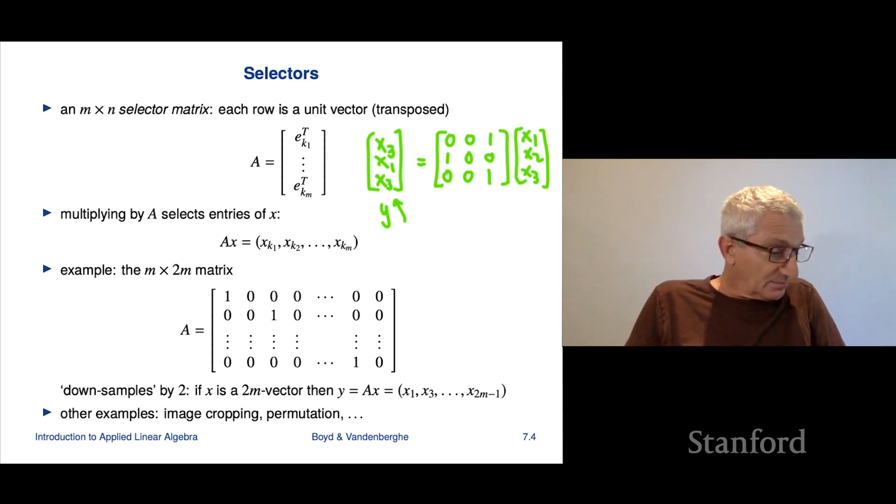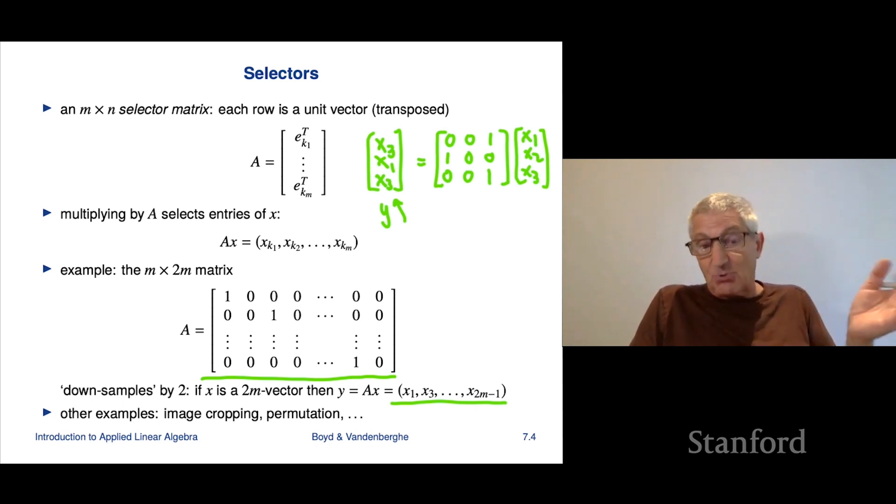So here's a practical example from, if you like, signal processing or time series. Here's the matrix A and it's an m by 2m matrix and it looks like this. So the first row is E1 transpose. The second row is E3 transpose. The third is going to be E5 transpose and so on. So if you imagine what happens when you multiply this by a vector x, here's what you get. It will take the first entry in the first component of Ax, then it will take x3, that's the third entry of x, then x5 and so on. And so for example, if x was a time series, then this would be referred to, the slang is you would say that the time series has been down sampled, meaning I'm taking the first, the third, the fifth, the seventh, and so on. And so you would be able to look at that matrix and say, ah, that represents if you multiply it by a vector, that's down sampling, for example.